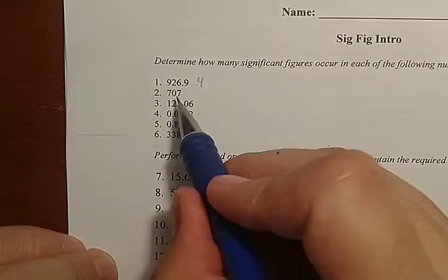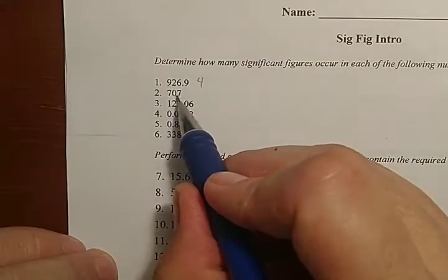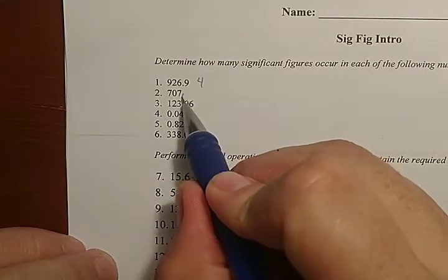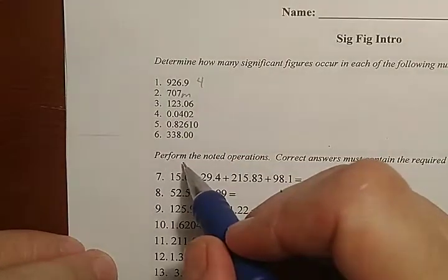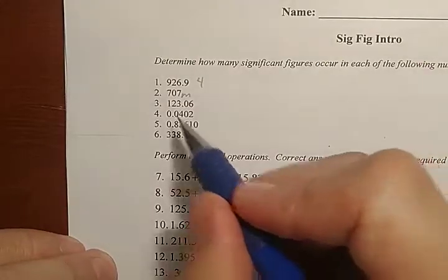On number two, the machine measured 707, like maybe 707 meters. Well, if it can measure the ones place, I bet it can measure the tens place. It's just that sometimes you measure something and you get zero.